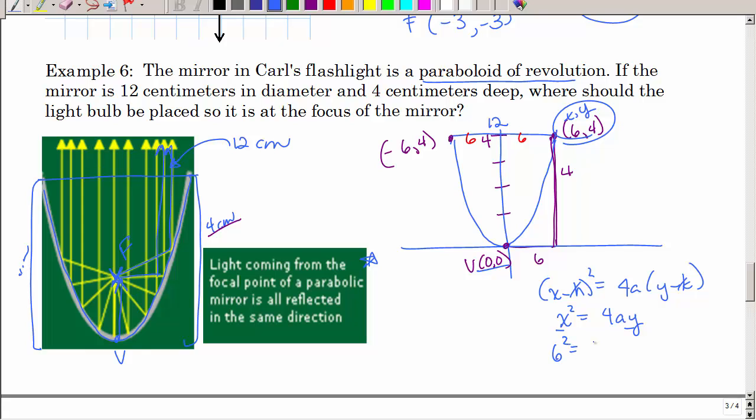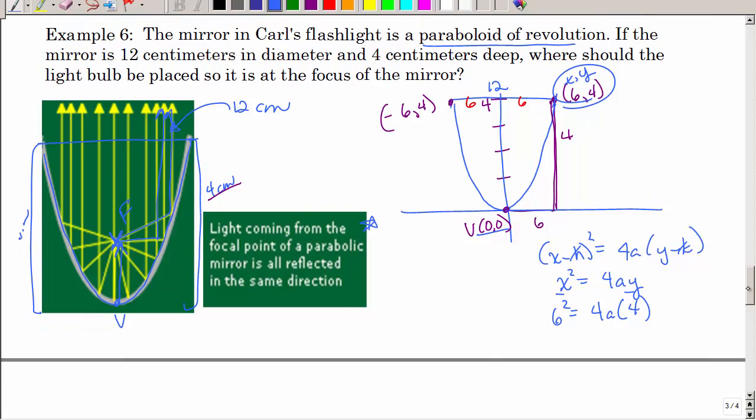So that would be 6 squared equals 4A times y. So I'd have 36, and I'm going to just keep that as 4. I'm going to divide by that 4, so 4A is 9. That tells me A is 9 fourths or 2 and 1 fourth centimeters.